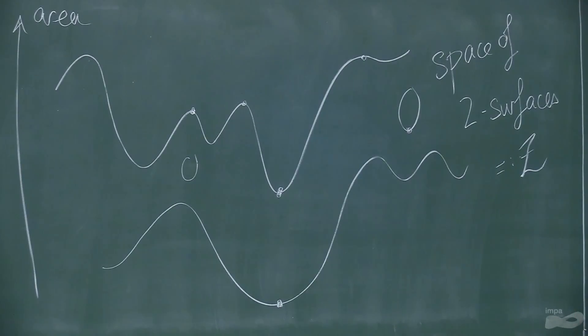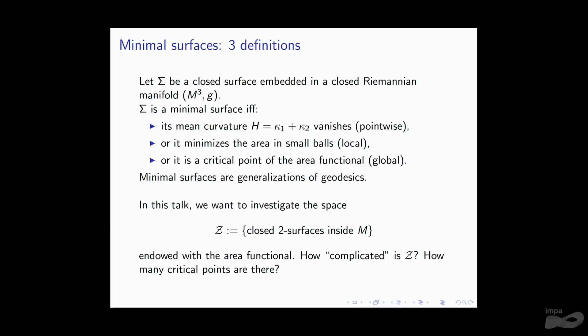To sum up, the goal of this talk is to investigate the space of two-surfaces inside M, which I denote by Z, endowed with the natural area functional, and to see how complicated this space is. Yao's conjecture can be reformulated as: there should be infinitely many critical points of this functional in this space of two-surfaces.